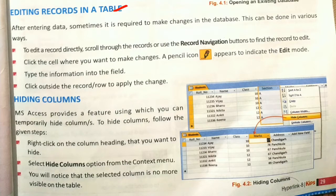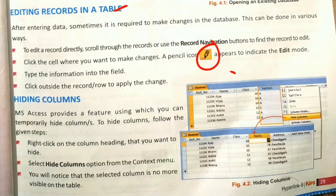Click the cell where you want to make changes. A pencil icon will appear to indicate that you are in edit mode. Type the information into the field that you want to edit. Then click outside the record row to apply the changes — the changes will be saved automatically. This is how you edit a record in a table.